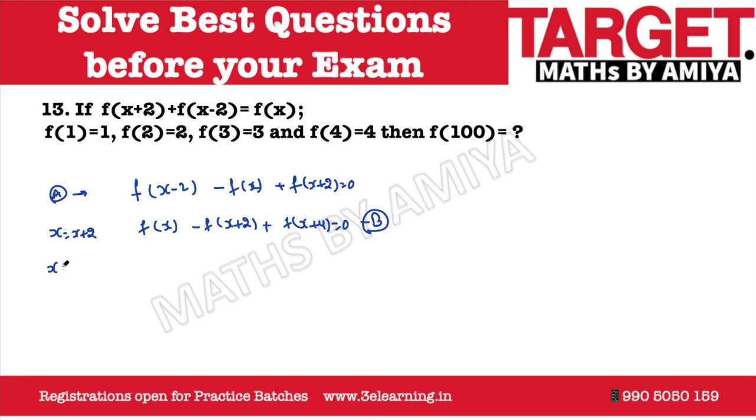Now, again, put x = x+2. So this becomes F(x+2) - F(x+4) + F(x+6) = 0. Say this one is C.